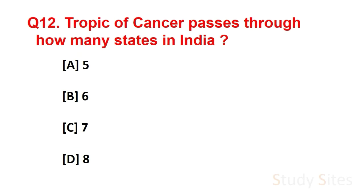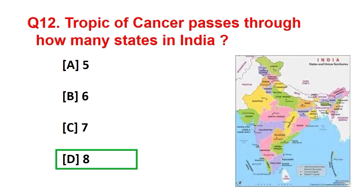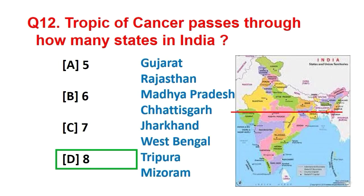Question number 12. Tropic of Cancer passes through how many states in India? Answer is 8. And they are Gujarat, Rajasthan, Madhya Pradesh, Chhattisgarh, Jharkhand, West Bengal, Tripura and Mizoram.